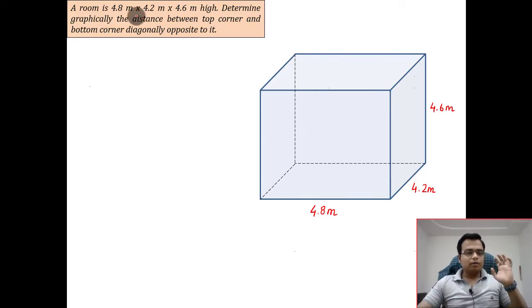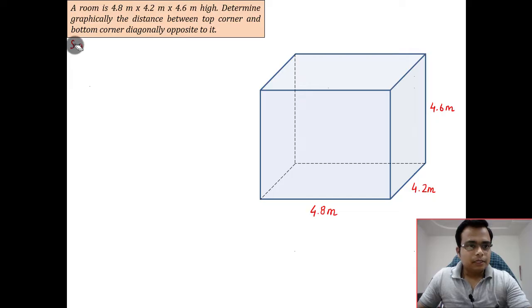In this particular problem, since all the dimensions have been given in meters, you need to take some kind of scale because drawing 4.8 meters is not possible on a drawing sheet which is hardly a meter wide. So let's just take it as one meter equals one centimeter. That's a good enough scale.